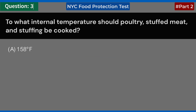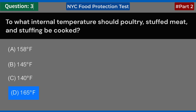To what internal temperature should poultry, stuffed meat, and stuffing be cooked? A. 158 degrees Fahrenheit. B. 145 degrees Fahrenheit. C. 140 degrees Fahrenheit. D. 165 degrees Fahrenheit. Answer: D. 165 degrees Fahrenheit.